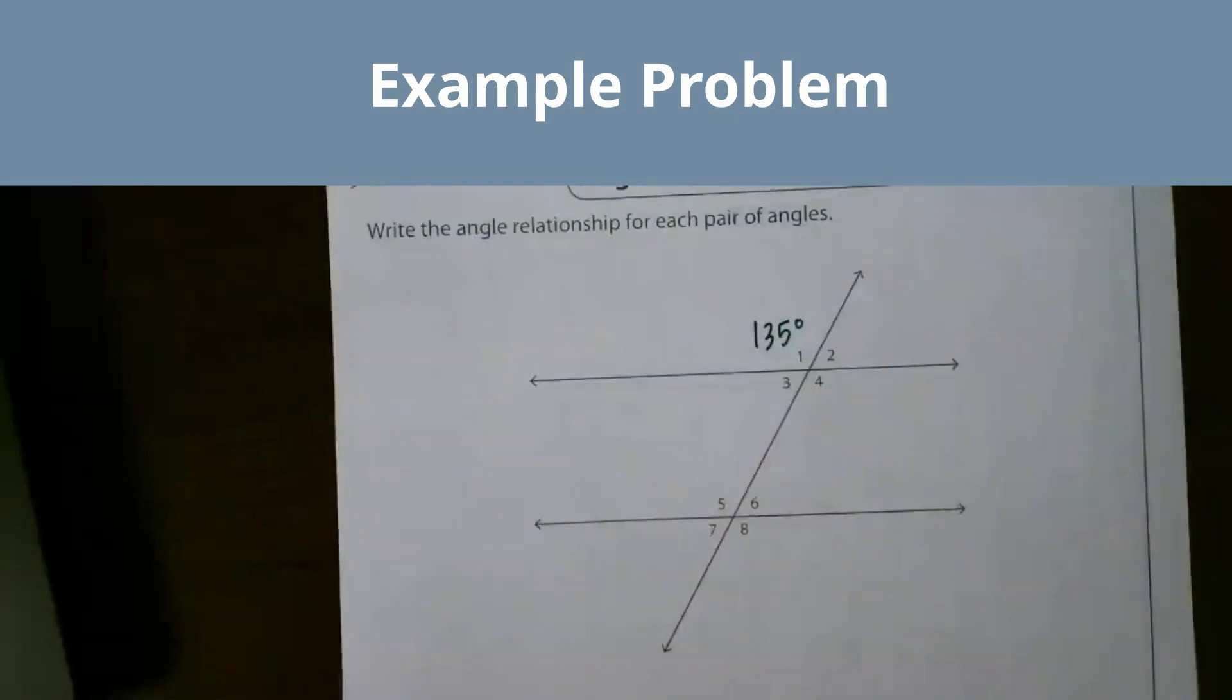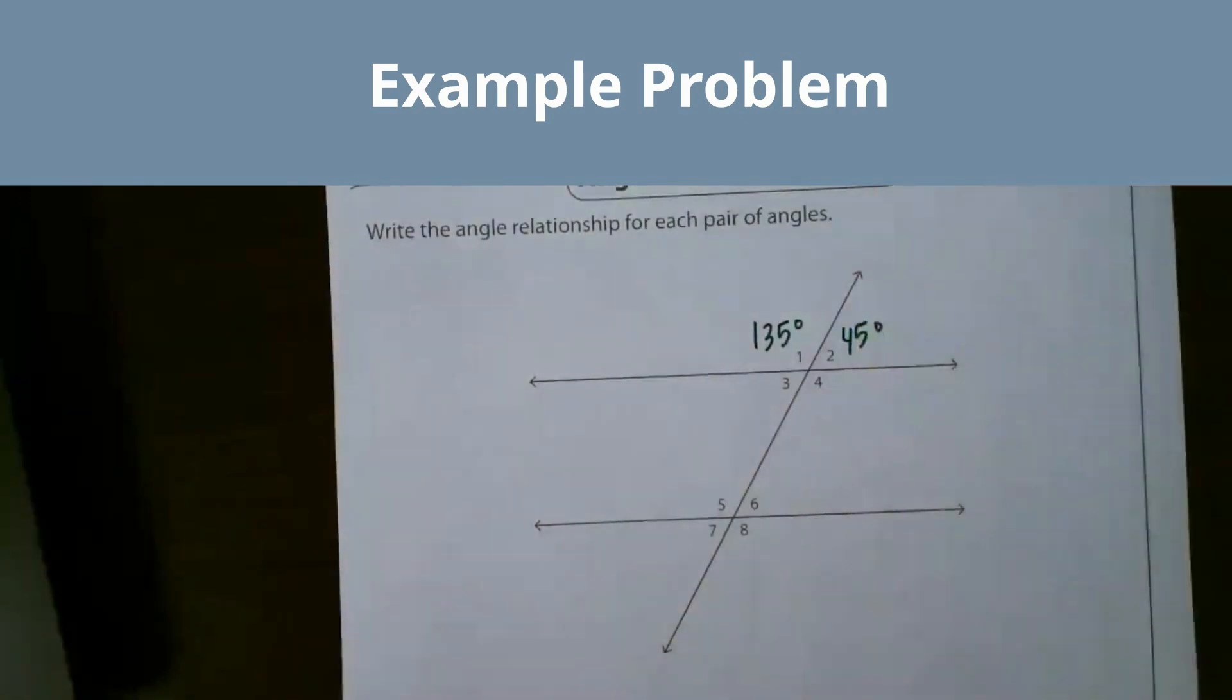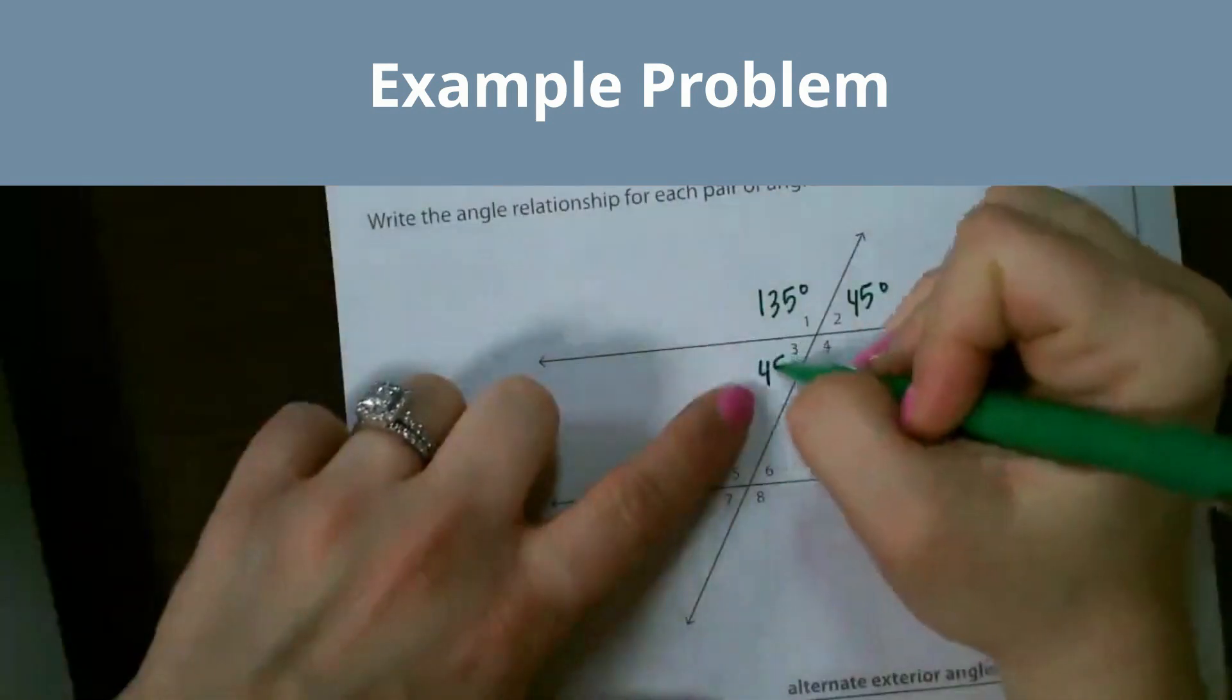If this is 135, remember those are supplementary angles, so this would be 45 degrees, which would make this angle here 45 and this one 135.